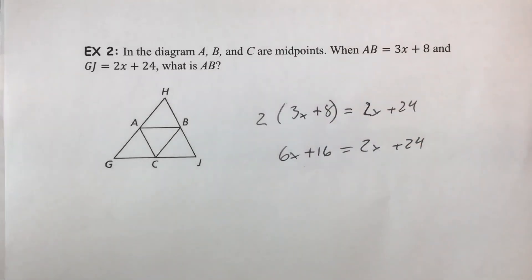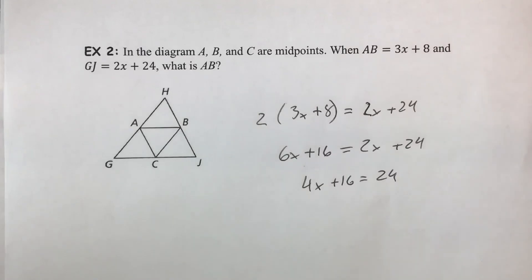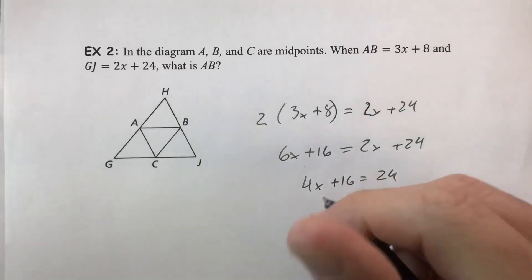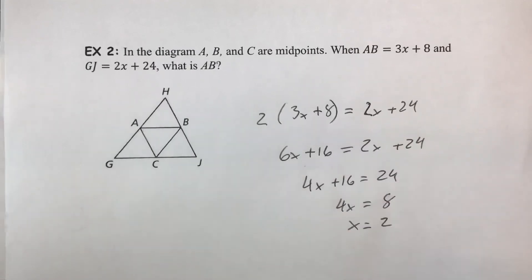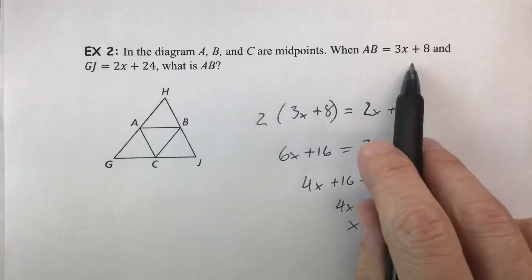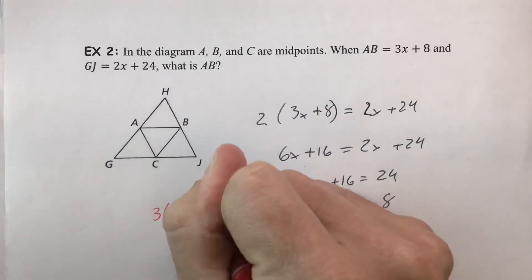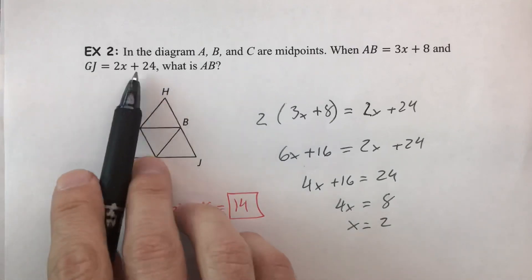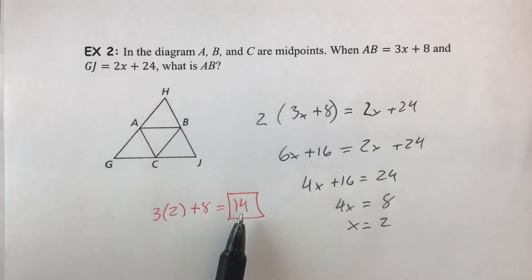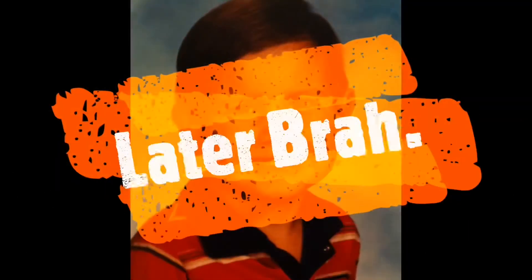Setting 6x + 16 equal to 2x + 24, we subtract 2x from both sides to get 4x + 16 = 24. Subtracting 16 gives 4x = 8, and dividing by 4 gives x = 2. Plugging back in: AB = 3(2) + 8 = 14. As a check, GJ = 2(2) + 24 = 28, and 28 is indeed twice 14, so everything checks out.